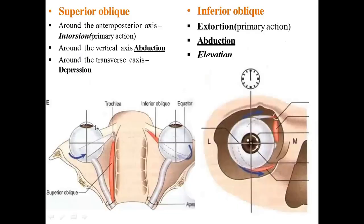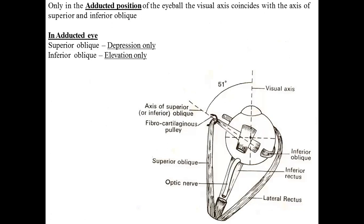Actions of oblique muscles: Superior oblique — primary action is intorsion (around anteroposterior axis); additionally abduction (around vertical axis) and depression (around transverse axis). Inferior oblique — primary action is extorsion; additionally abduction and elevation. In the adducted eye, superior oblique causes depression only, and inferior oblique causes elevation only.